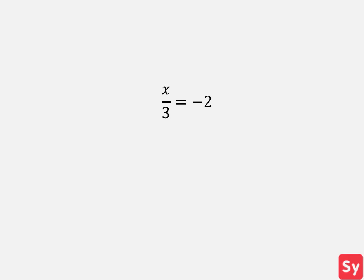We want to isolate x on one side of the equation, so we have to undo what has been done to x. We see that x is divided by 3, so we want to multiply 3 to x. That means we have to multiply 3 to the other side of the equation. This simplifies to x equals negative 6, our answer.